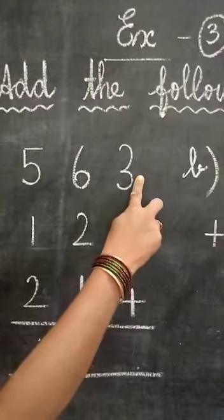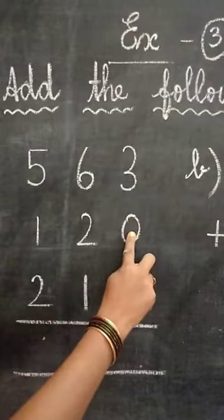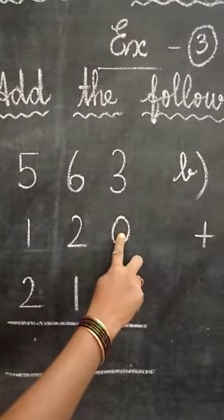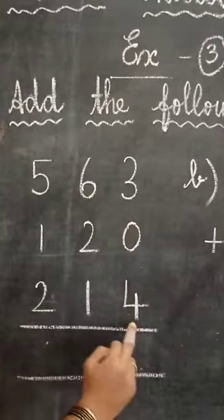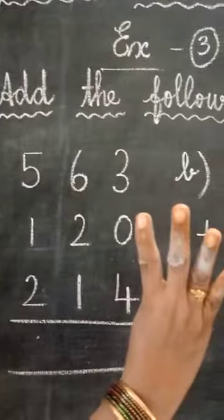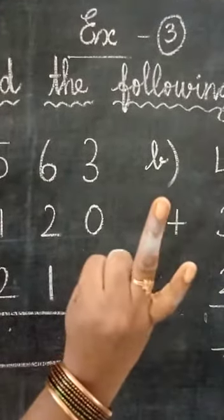Yes, what is the first number here? 3. 3 plus 0, any number you add is 0, the answer is the same number, 3. Now 3 in the mind, 4 in the finger, after 3: 4, 5, 6, 7.